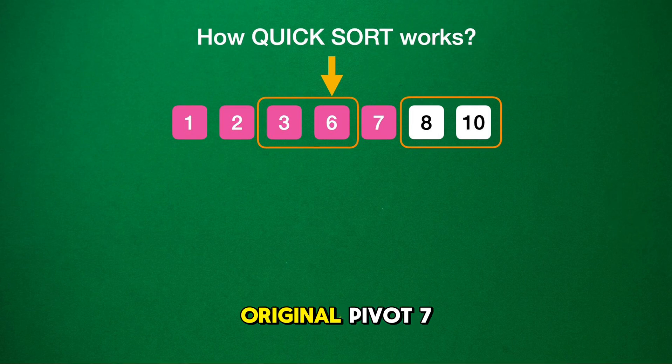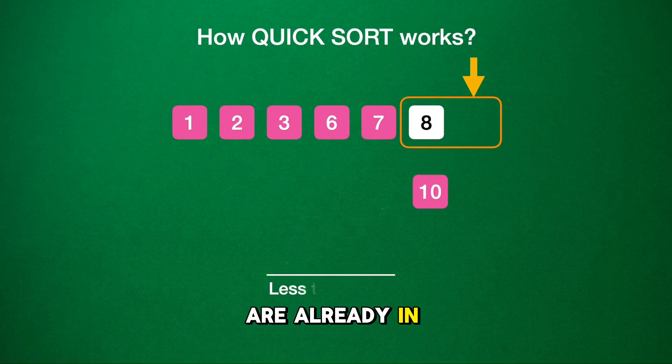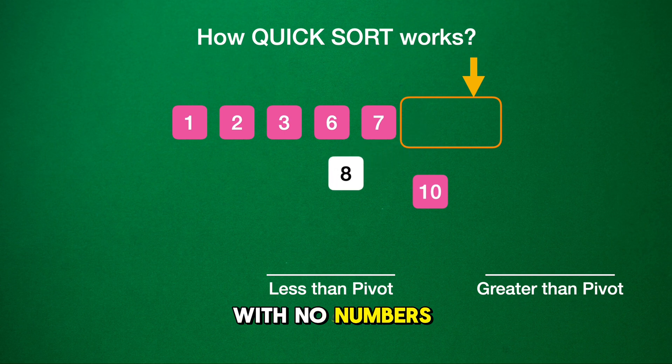Next, we move to the right side of our original pivot, 7, where we have the numbers 8 and 10. Looking at 8 and 10, we see they are already in the correct order as well, with no numbers between them to sort.